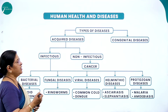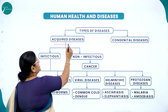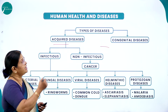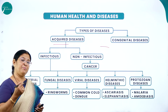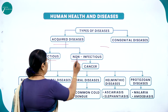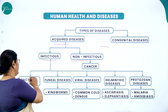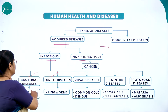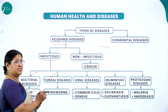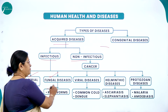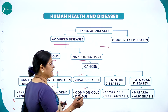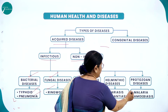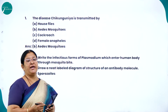Diseases are also classified into acquired diseases and congenital diseases. Acquired diseases are those we acquire during our lifetime; congenital diseases are present right from birth. Acquired diseases are further classified as infectious and non-infectious. Infectious diseases include bacterial diseases like typhoid and pneumonia, fungal diseases like ringworm, viral diseases like common cold and dengue, helminthic diseases like ascariasis and elephantiasis, and protozoan diseases like malaria and amoebiasis.